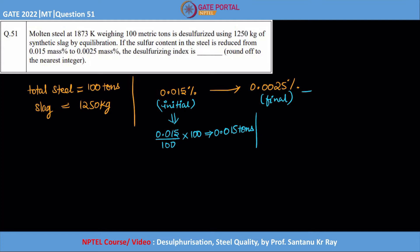So again 0.0025 tons. This is the weight of initial sulfur and the final sulfur. So where is this difference going?